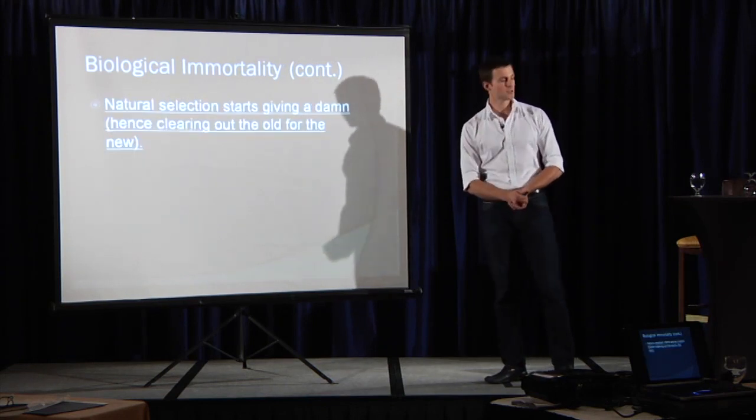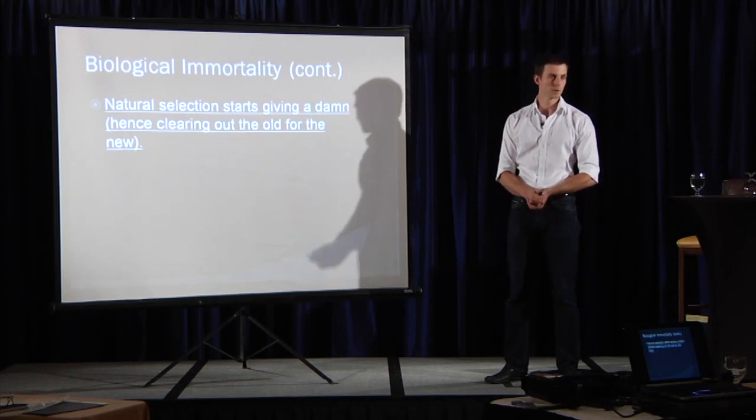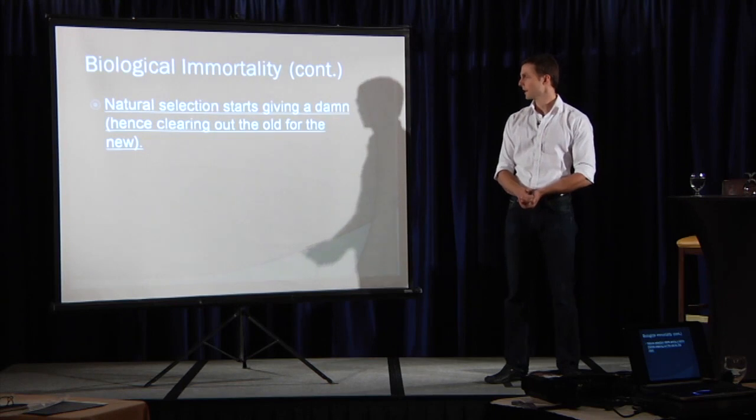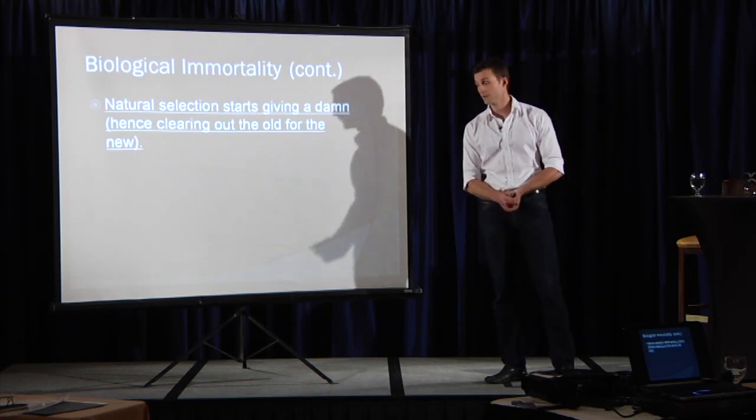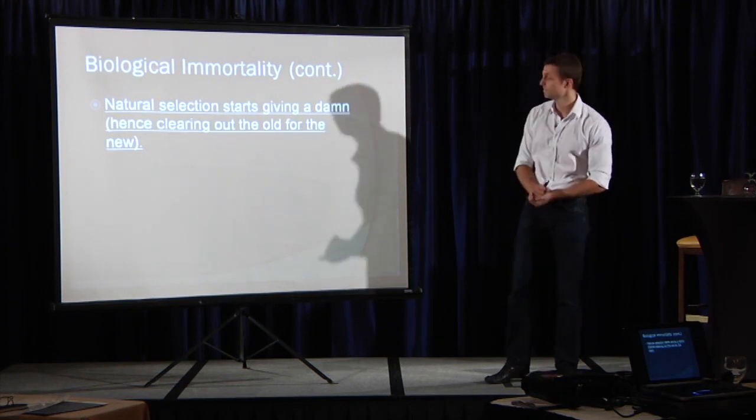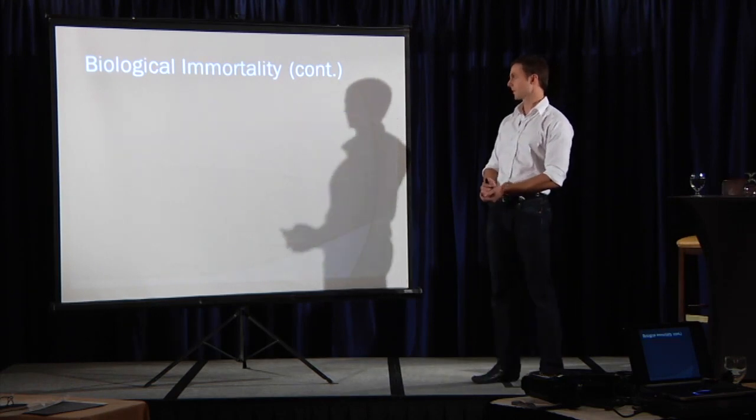Natural selection starts giving a damn. Your body is pretty damn good at getting you to childbirthing years. And then after that, everything goes to hell in a handbasket if you're not taking care of yourself. That's why it's a tragedy when a 45-year-old gets cancer, but it's not unexpected. It is a heinous tragedy when a nine-year-old gets cancer, because they shouldn't. Natural selection is pretty good about getting you there, but it's not perfect.